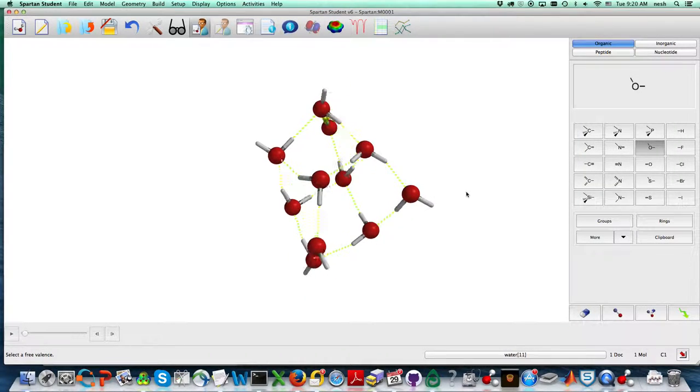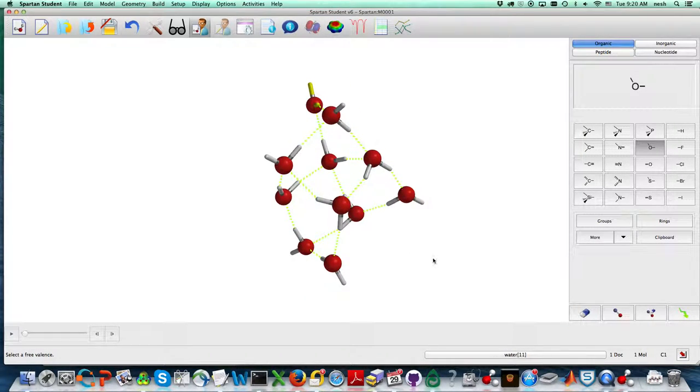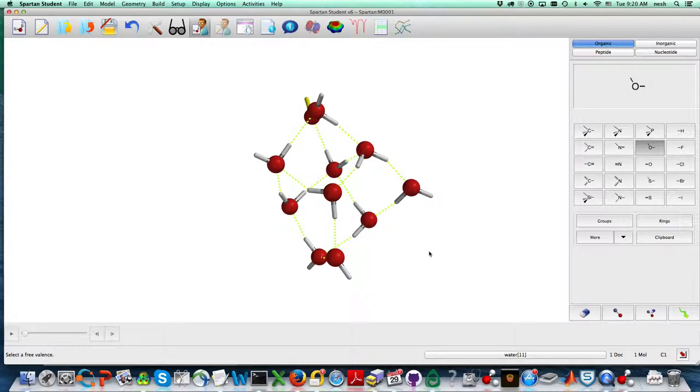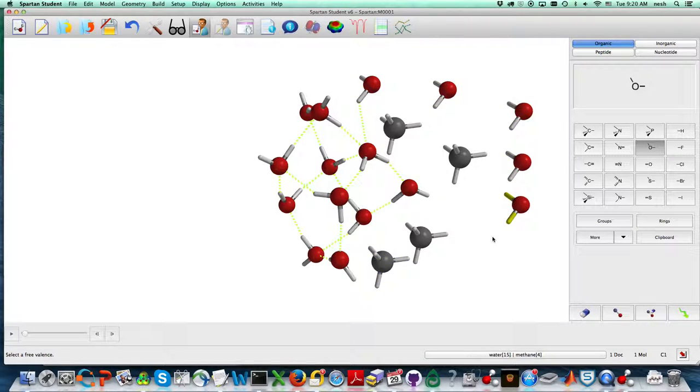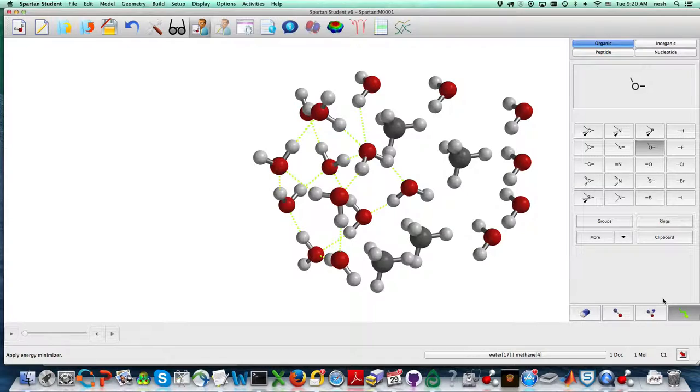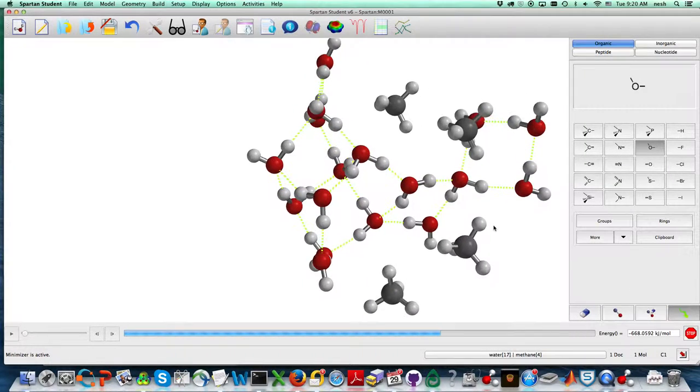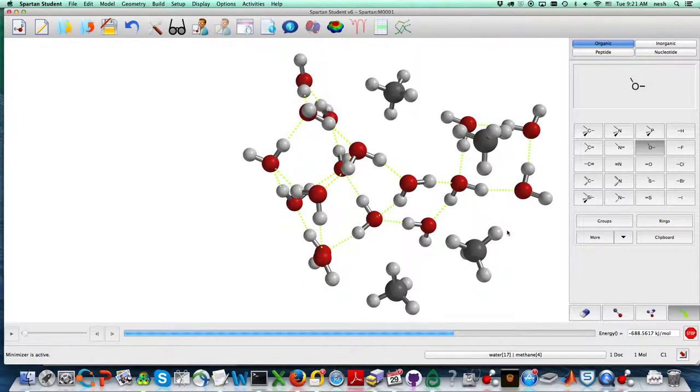If you want, you can add some methane molecules. I'm just putting them on the outside, then I'm going to try to capture them with some water and hit the minimize function again. You can kind of see how the water molecules are forming their network and excluding the methanes.